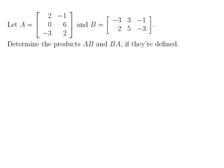Let A be the 3 by 2 matrix: 2, minus 1, 0, 6, minus 3, 2. And B be the 2 by 3 matrix: minus 3, 3, minus 1, 2, 5, minus 3. Determine the products AB and BA if they're defined.